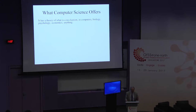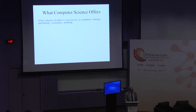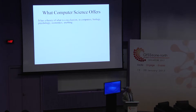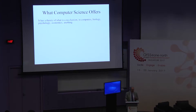Some of you may be computer scientists, some may be neuroscientists, and most of you are something else, so I'll start with some very general thoughts. How does computer science make a contribution to another field, say biology? Computer science, above all, is a theory of what's a mechanism — what's a procedure, what's a recipe.